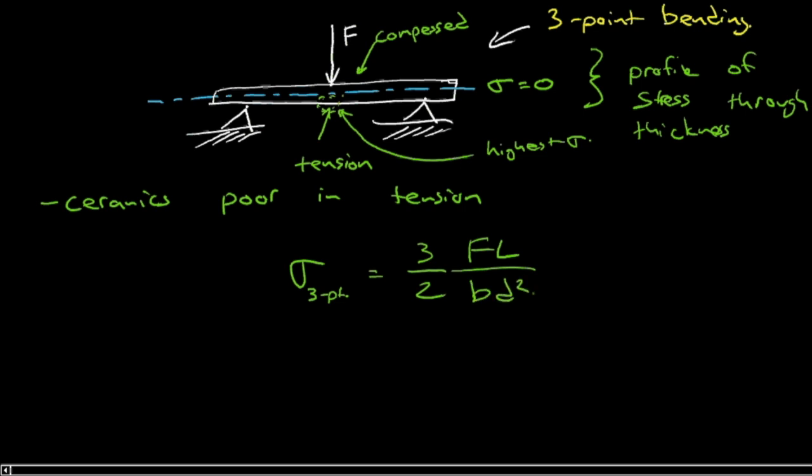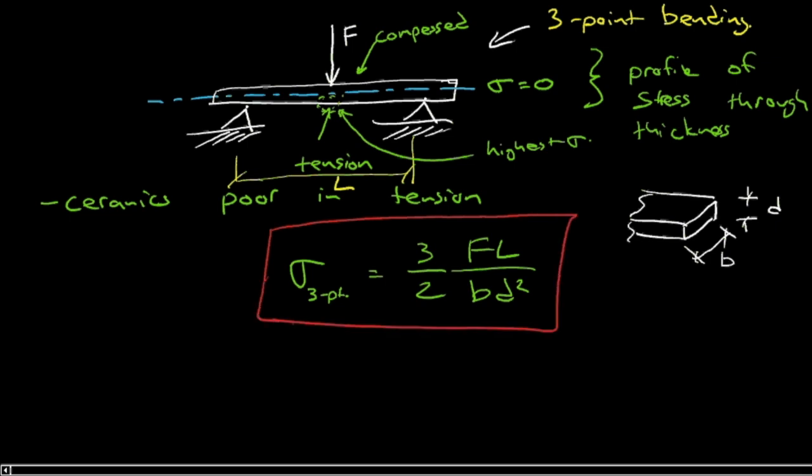I didn't introduce some of these terms, so let me do that now. F is the force I have to find. The span from one lower support to the other is L. The beam itself, if it's rectangular cross-section, has a height or depth of d and a width of b. That's our equation for three-point bending of a rectangular cross-section beam.